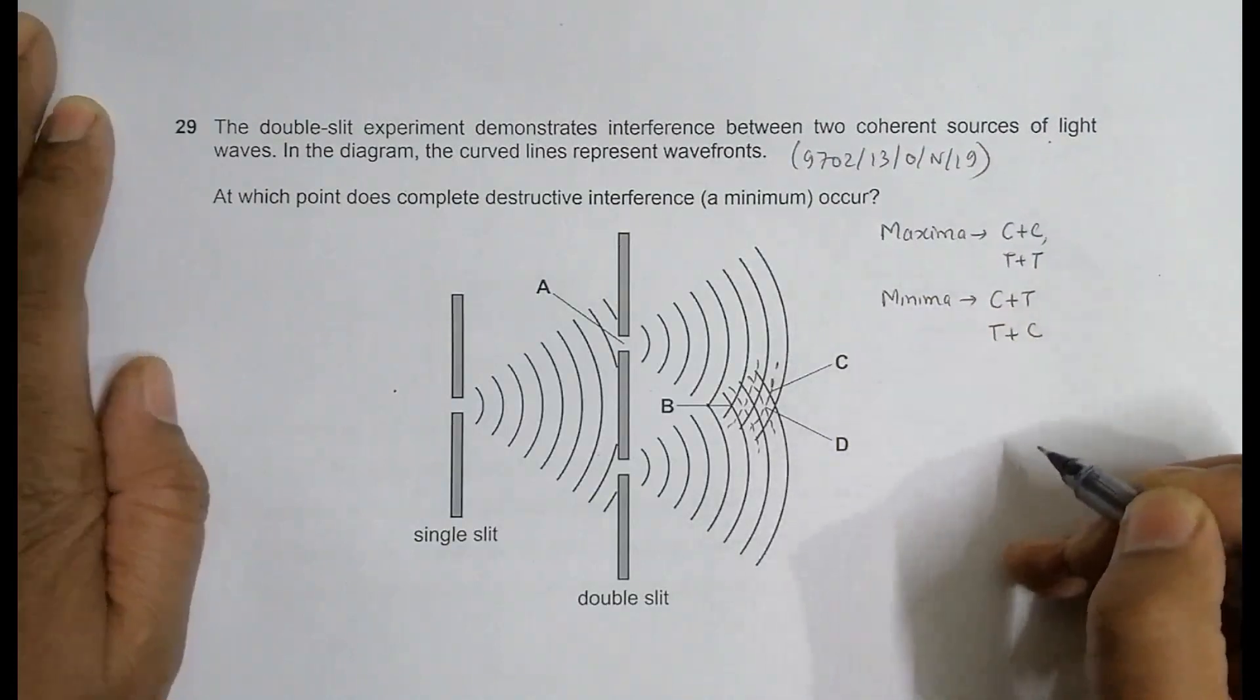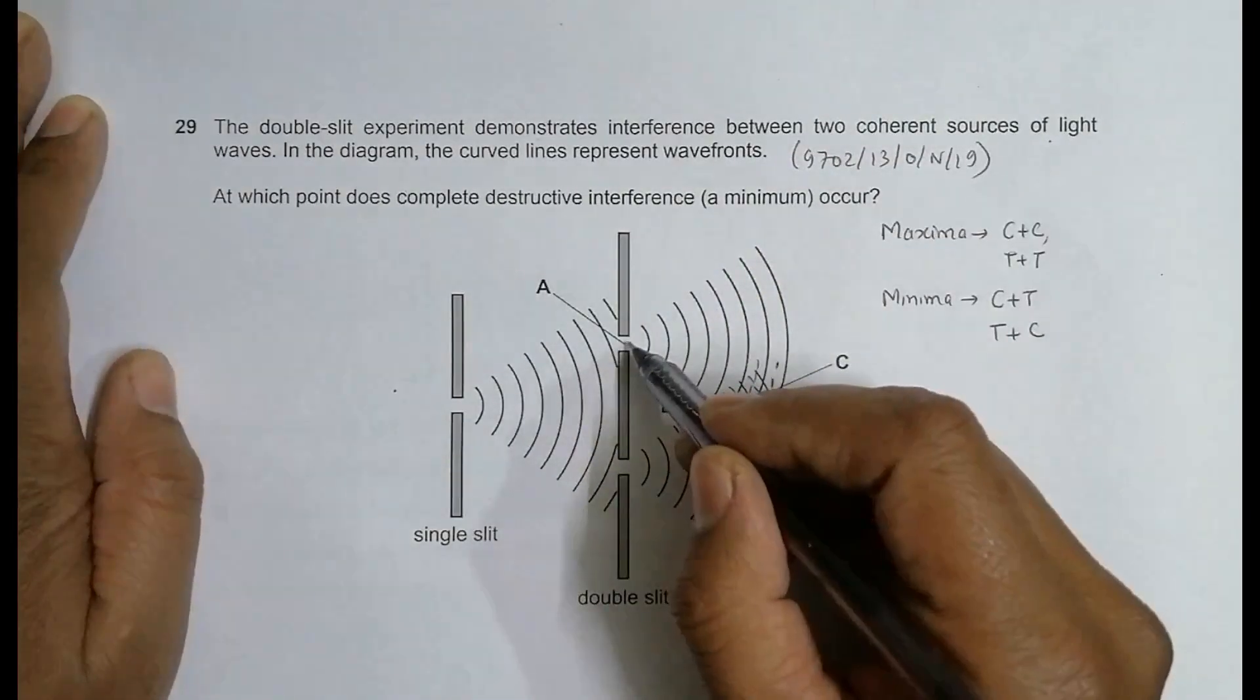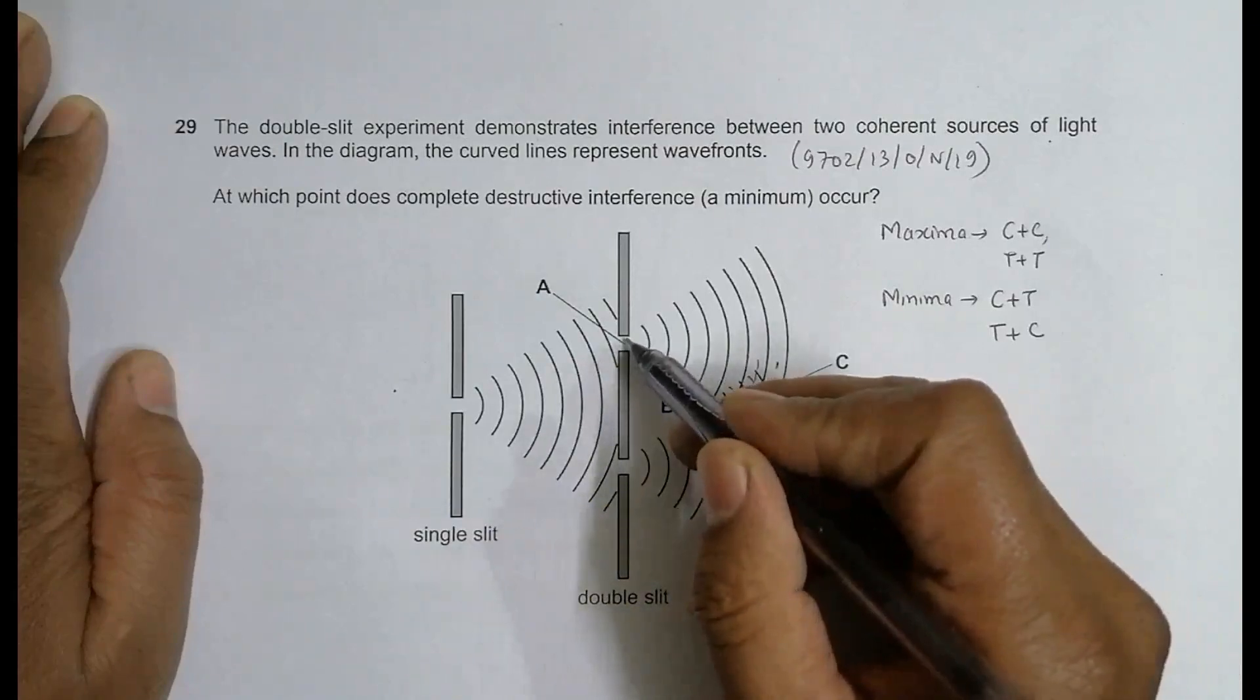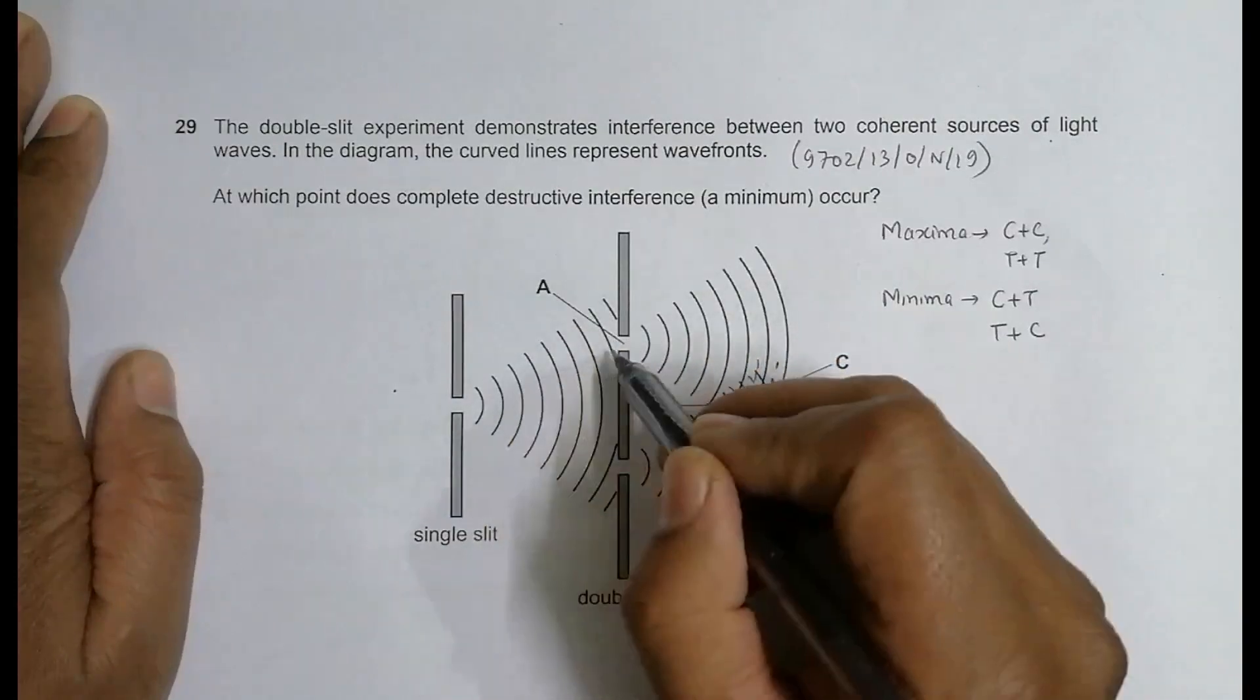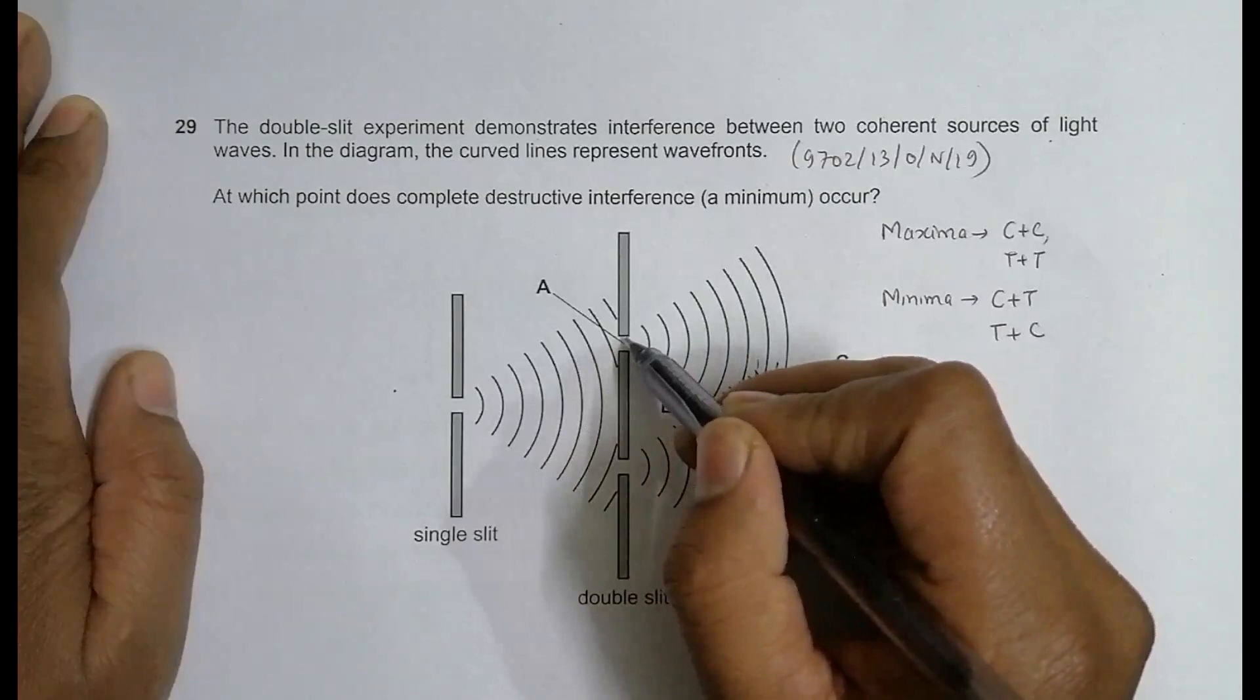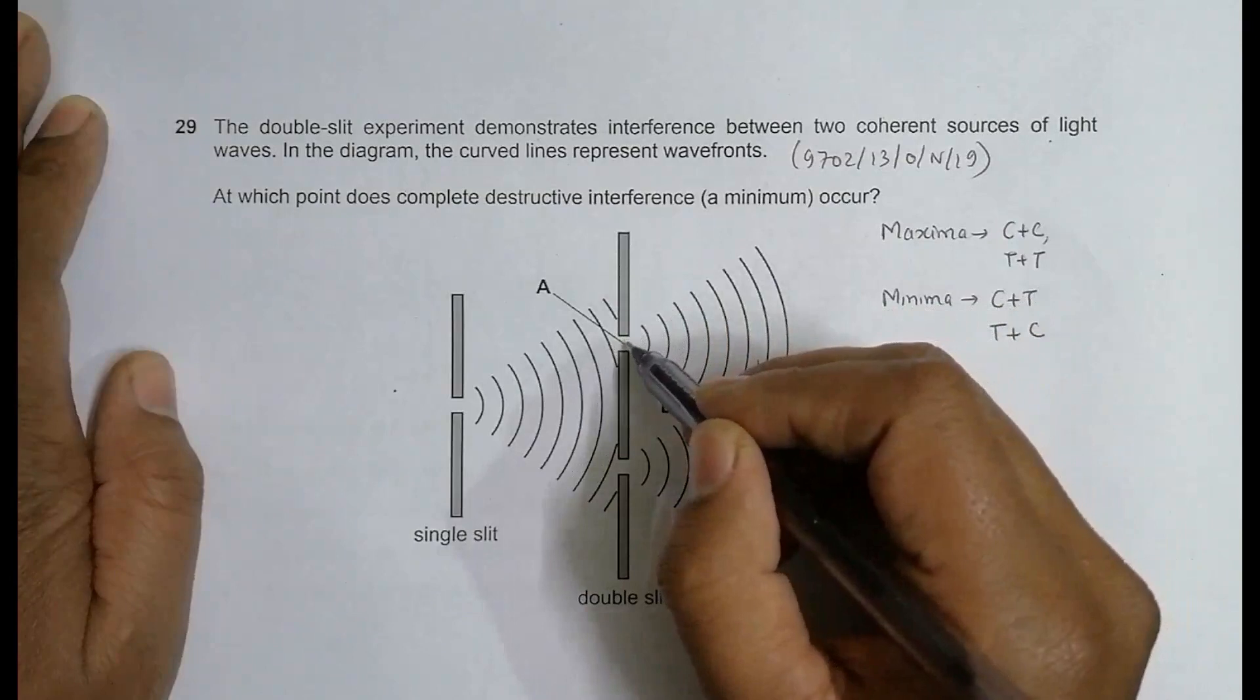We have to find where the minimum occurs. First is point A. At A there is no difference at all because the waves from here do not reach there. It simply has the intensity which is available here, so we neither have positive constructive nor destructive interference. The intensity is somewhat middle, so we don't have minima or maxima here.